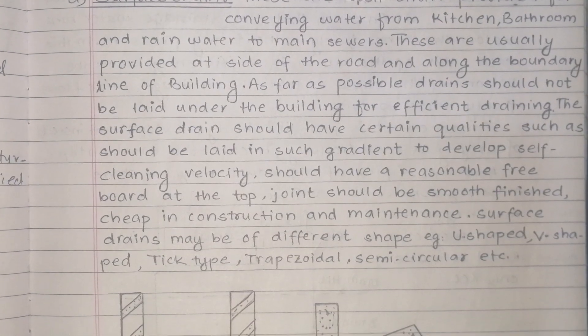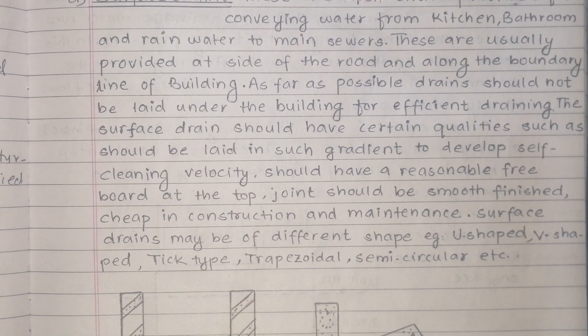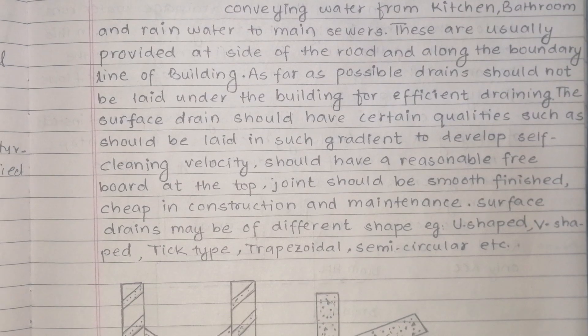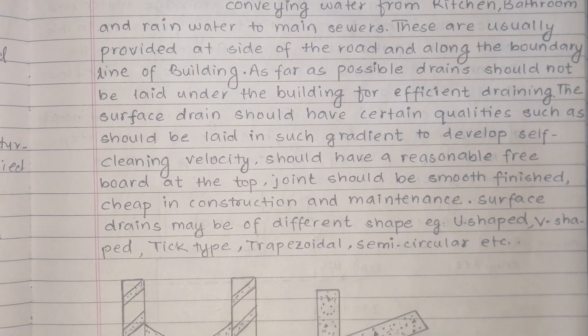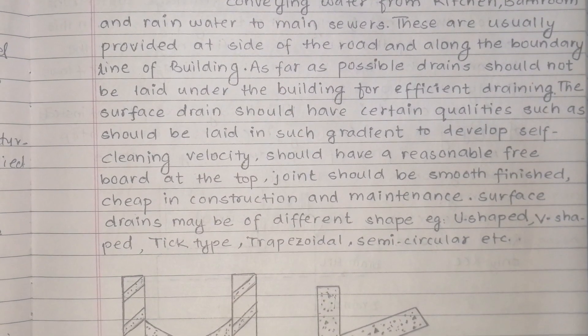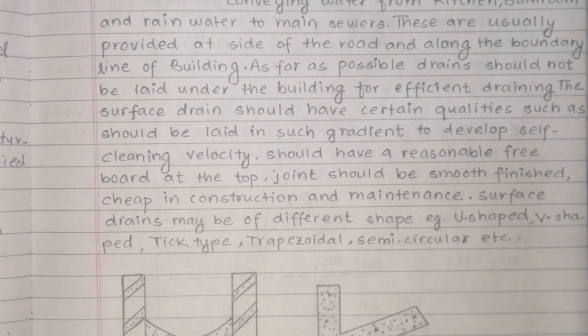Surface drains may be of different shapes. For example: U-shape, V-shape, Trapezoidal shape, and Semi-circular shape.